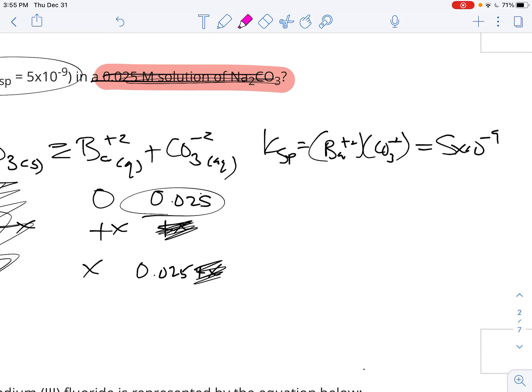So we have X and 0.025 is going to be equal to five times 10 to the negative ninth. Your X then is going to be equal to five times 10 to the negative ninth divided by 0.025. X is going to be equal to two times 10 to the negative seventh.